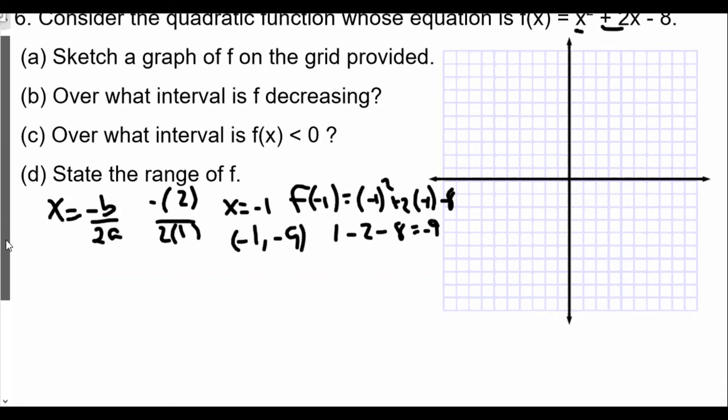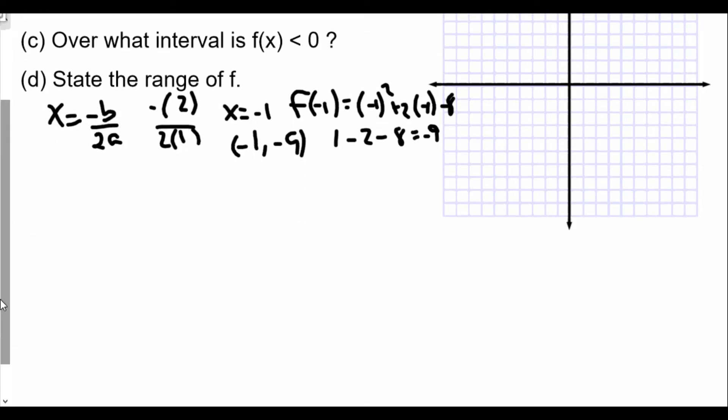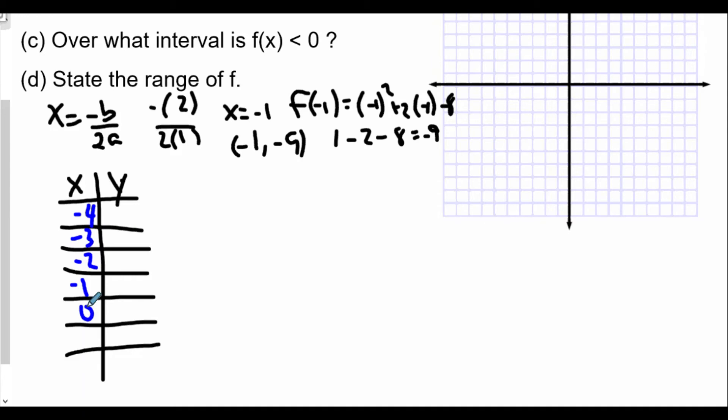Now this would be helpful for our table later on. So let's make our table. The values we're going to be using, x and y. I like using seven values. And the middle number we're going to use for our values is going to be our -1. So I have -1 here. We have -2, I have -3, I have -4, and then 0, 1, and 2.